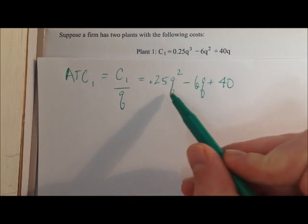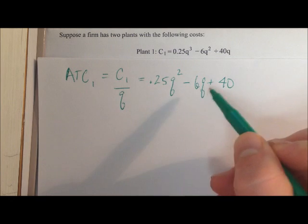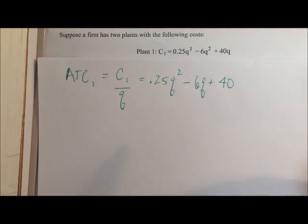And we want to find the quantity at which this average total cost is minimized. And in order to do that, we're going to rely on an important relationship between average total costs and marginal costs.